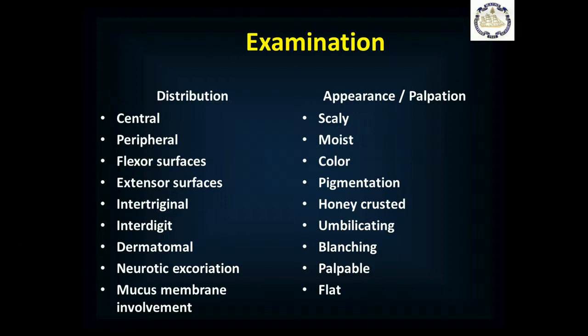In terms of appearance, is it scaly — covered with little flakes? Is it moist or dry? What color is it? Is it pigmented like a freckle or does it match the underlying base skin color? Does it look like honeycomb crusting across the top? Is it a firm raised mass with a little hole in the center — what's called umbilicating? Does it blanch? That is, if you press a red lesion, does it turn pale, and when you release it, does it turn red again? Can you feel it or is it flat?